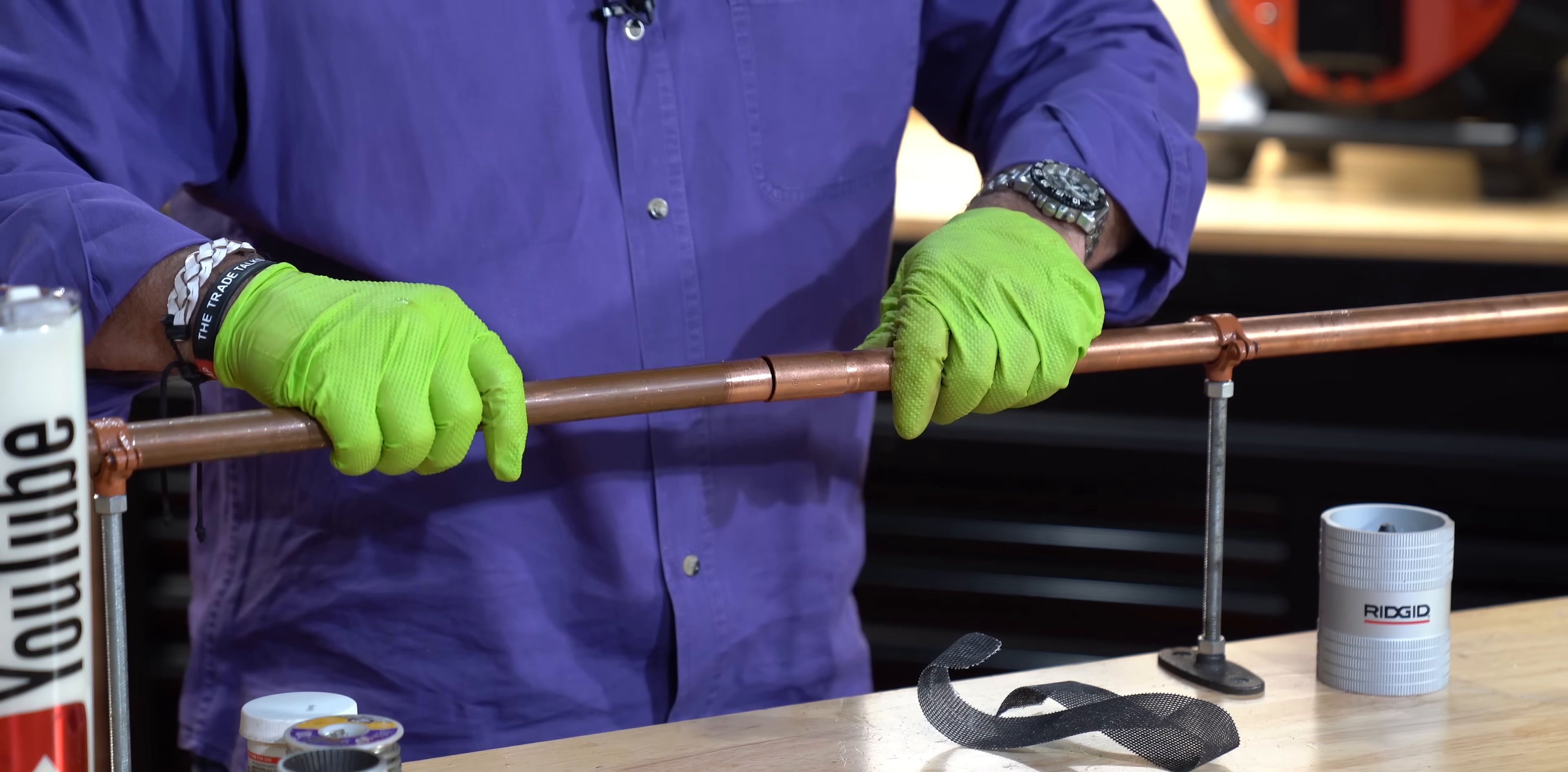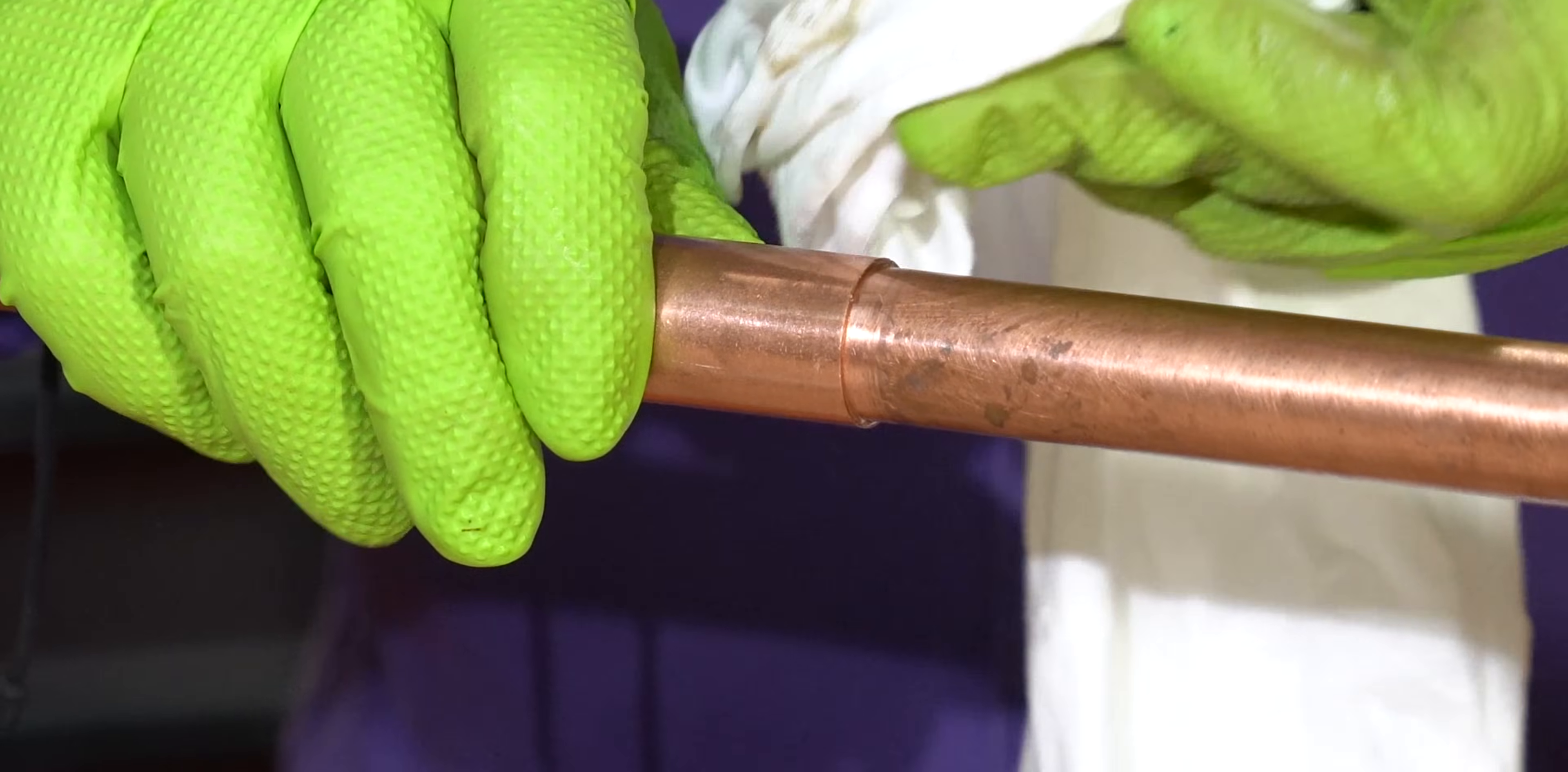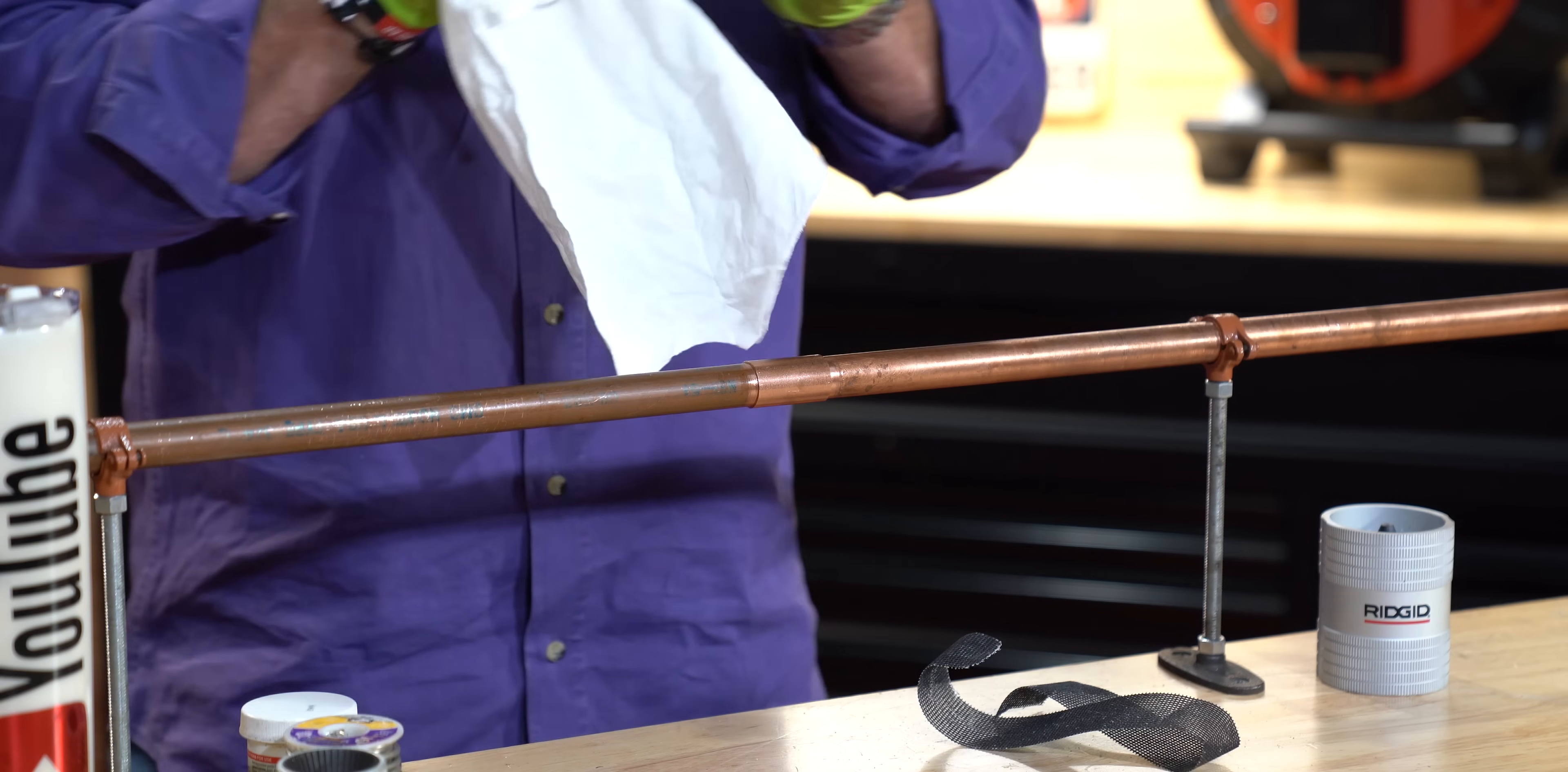That way, when I line up the other piece and push it in, now I know that they're both right in the center. At this point, I'm going to take a cotton rag and just wipe down my joint. I don't want any extra flux, any extra soldering paste. You'll stick it out way down because it makes it easy for the copper to run towards it. So I'm going to get that cleaned up and ready to go.